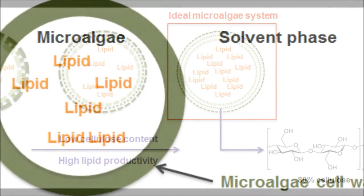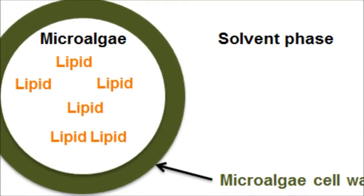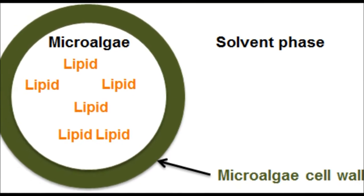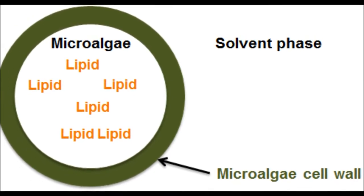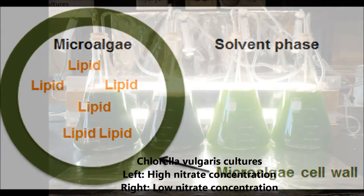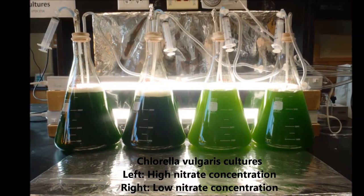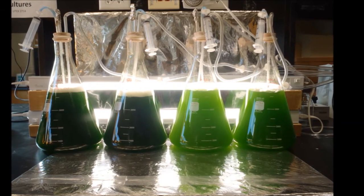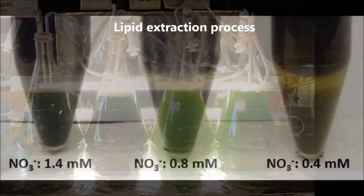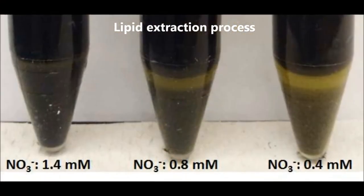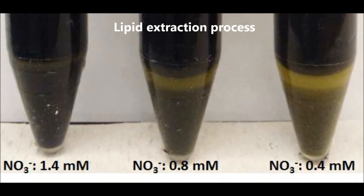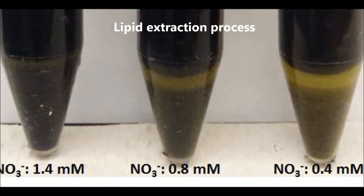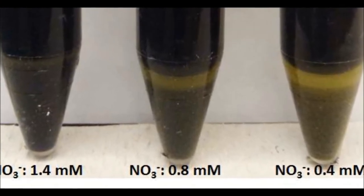This paper addresses the important problem of recovery of lipids from microalgae for biofuel applications. It is known that carbon dioxide and nitrate enhance biomass growth and lipid yields. What is not known is how cell wall structures, which is a diffusional barrier, can change as well.